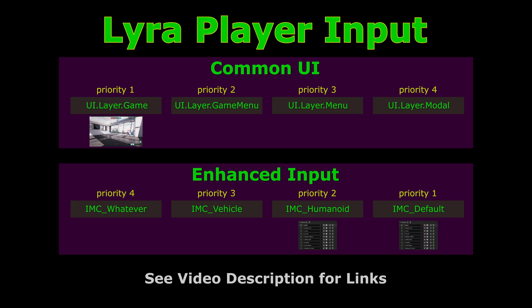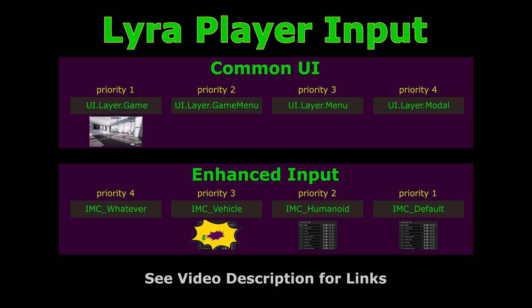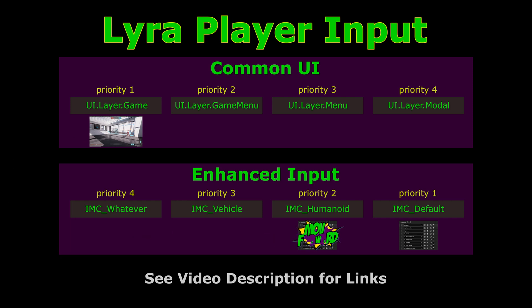You can change the input mapping contexts at runtime. For example, if the player possesses a vehicle, you could add an IMC vehicle input mapping, which would intercept the W key and instead of moving forward, would cause the vehicle to accelerate. As long as this IMC vehicle exists with a higher priority than the IMC Humanoid, the vehicle will get accelerate input. Disabling IMC vehicle causes the input to go back to IMC Humanoid, where it's interpreted once again as move forward.